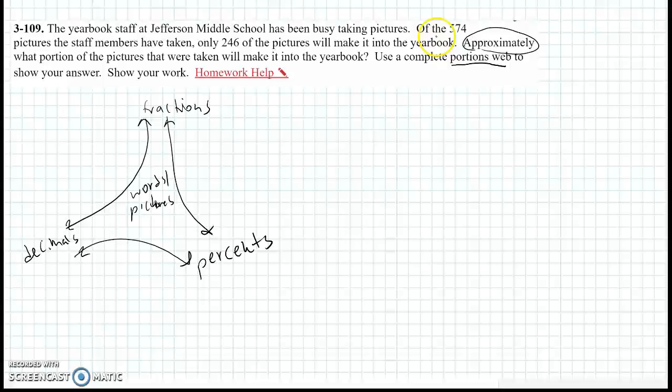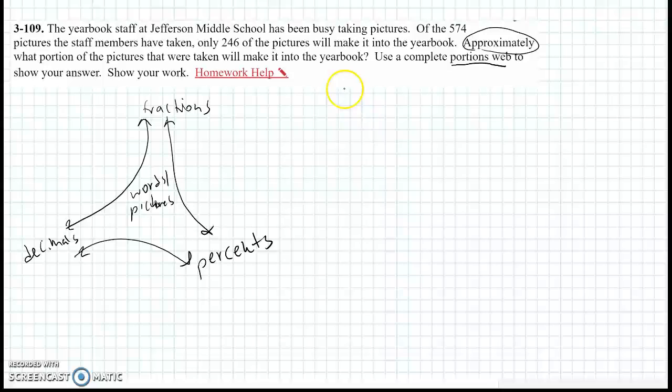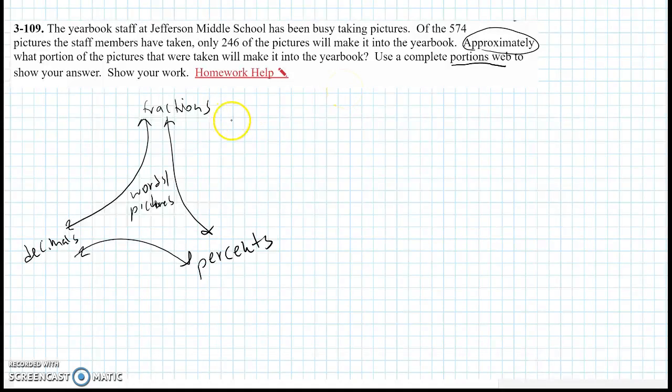So let's talk about what our initial portion is. Can I represent the number of pictures that will make it into the yearbook as a fraction? What is my initial portion? What is my total? So the total is the amount of pictures taken. So there were 574 pictures taken out of a total of 246.